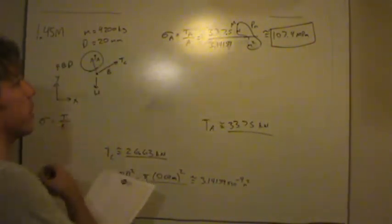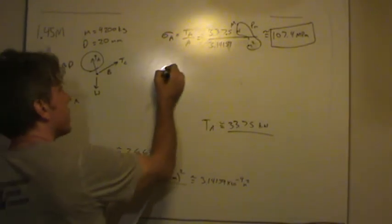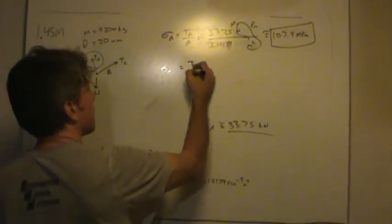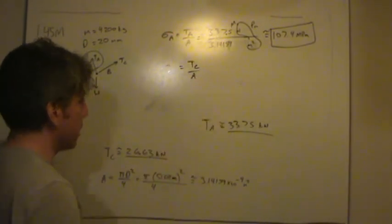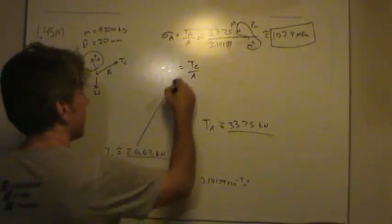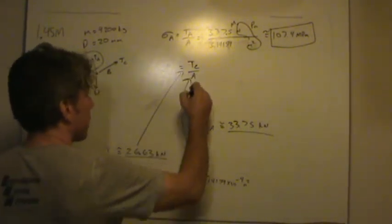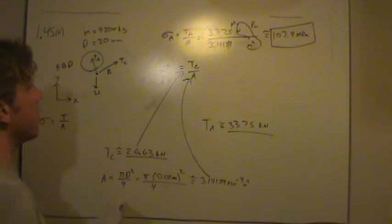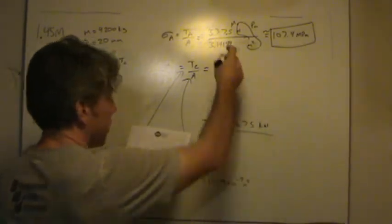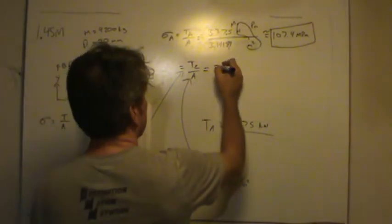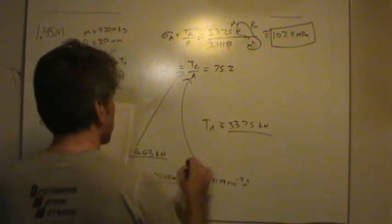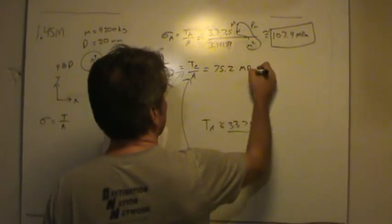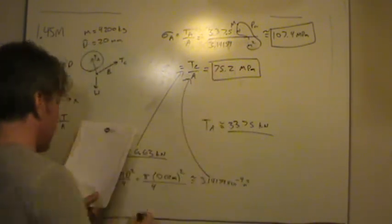Now, the stress in C is the tension in C divided by the area. Again, I'm not going to go through the details here. That number goes here. This number is going to go here again because both rods have the same cross-section. Plug all of it into your calculator. Same units consideration. And there's the result for the stress in C.